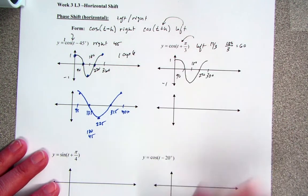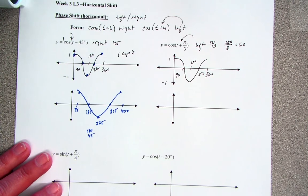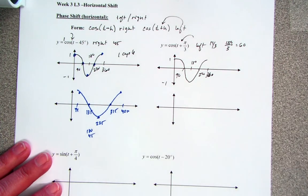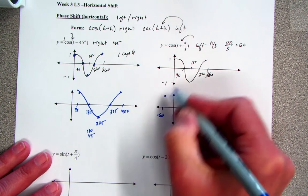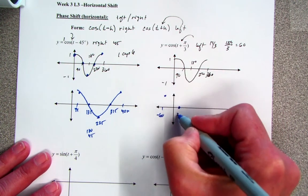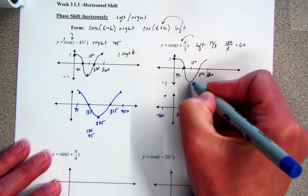Notice my amplitude did not change, nor did my period. It was still 360. And I'm going to pull everything to the left 60. So that means instead of starting at 0, this is going to be negative 60. Instead of hitting at 90, it's now going to be 30. So these are the points I'm going to move 60.